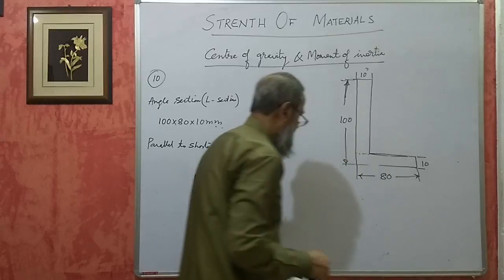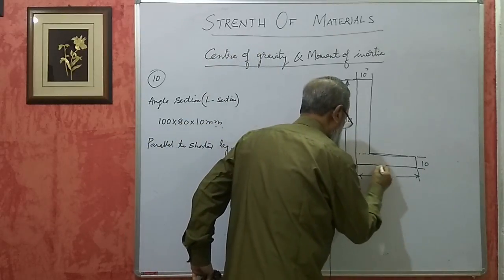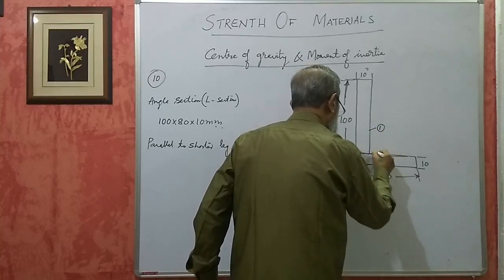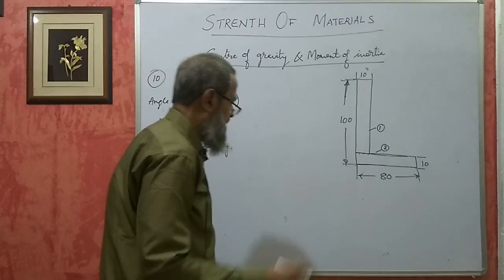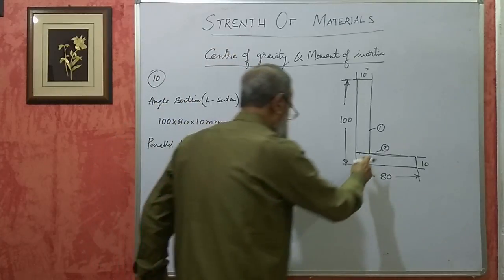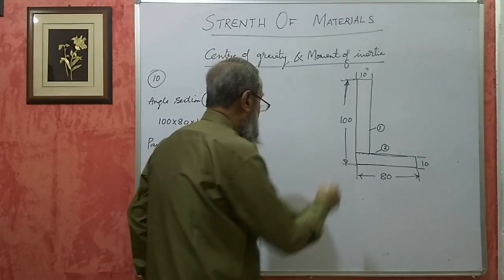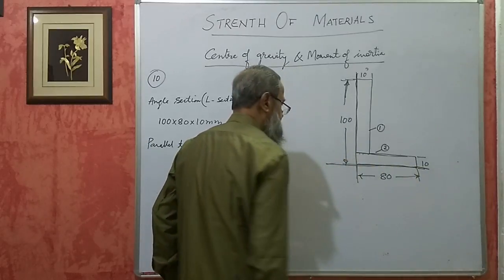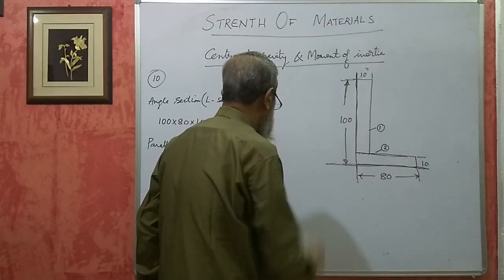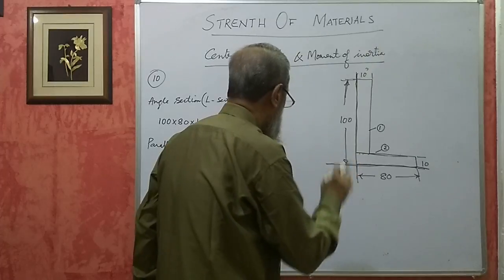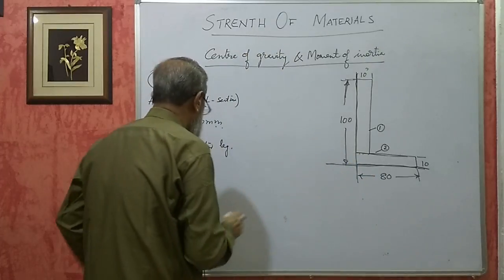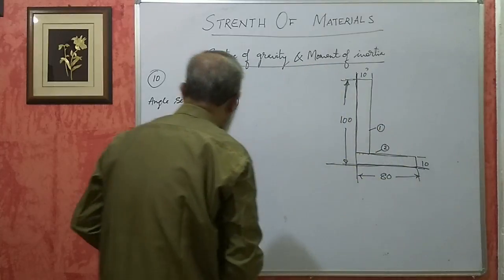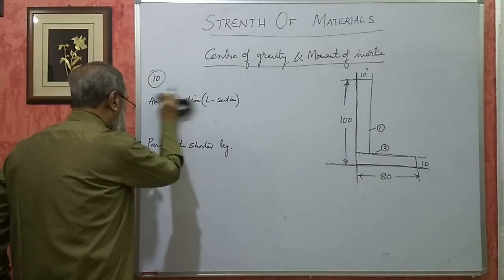I have taken this as rectangle one and this as rectangle two. This is the vertical reference axis and this is the horizontal reference axis. Since the L-section is neither symmetrical horizontally nor vertically, we have to find both X̄ and Ȳ coordinates for the center of gravity.